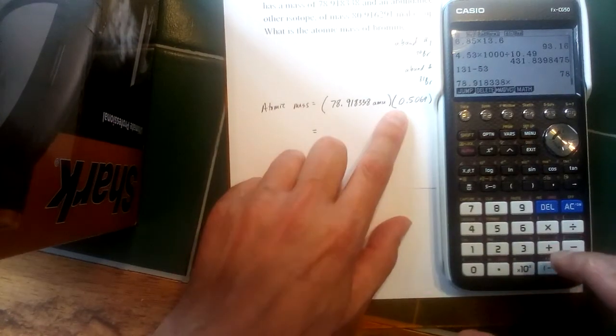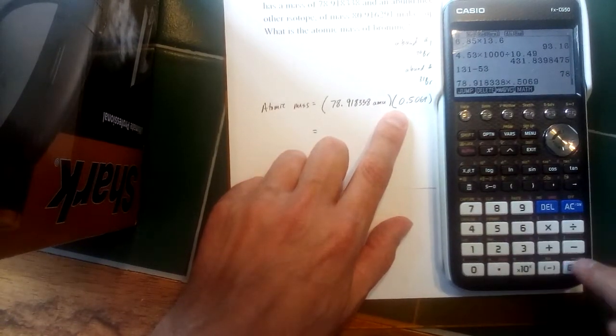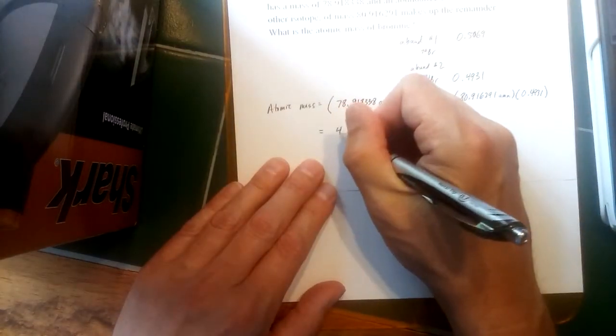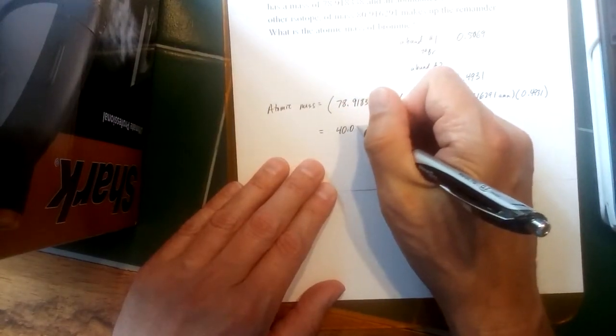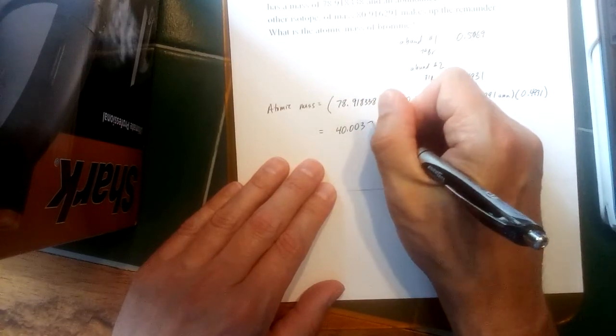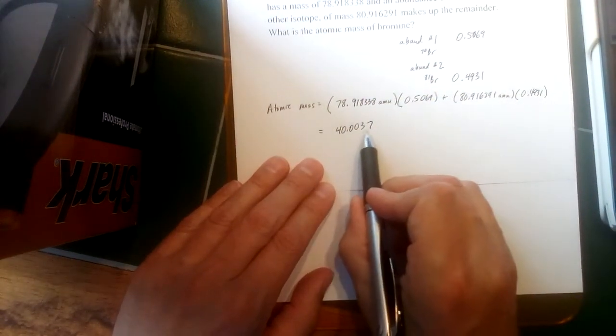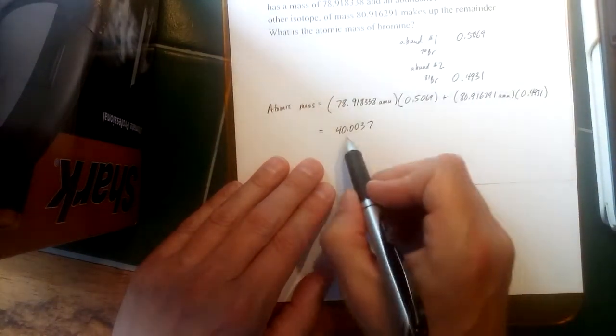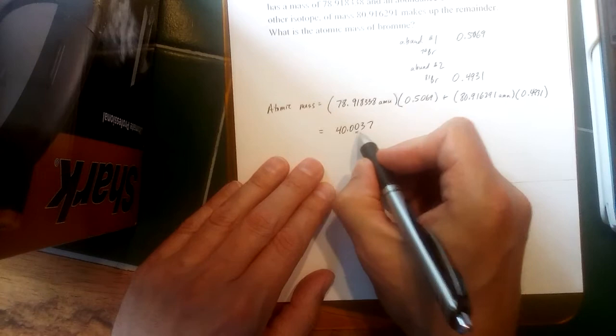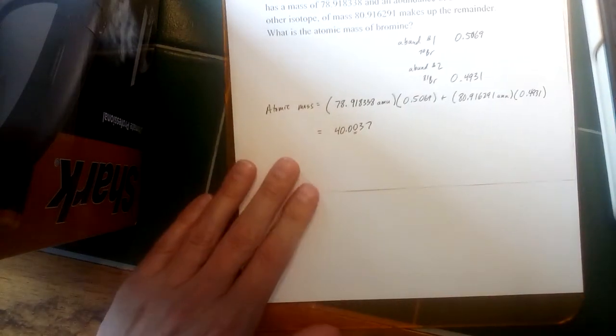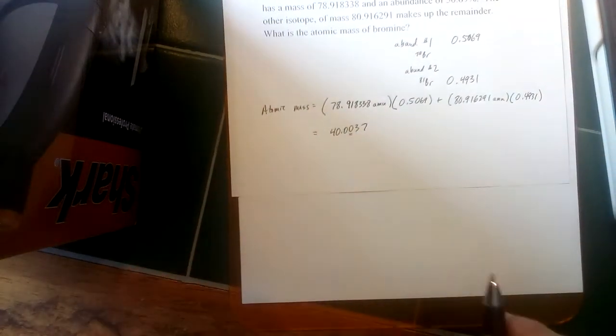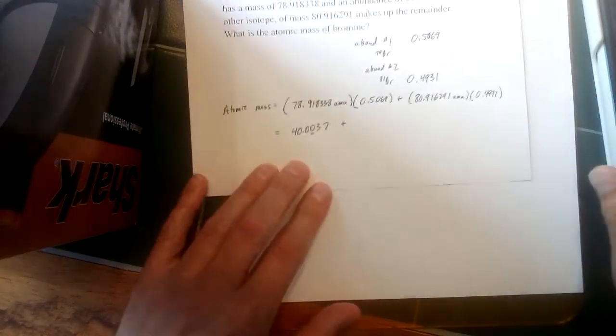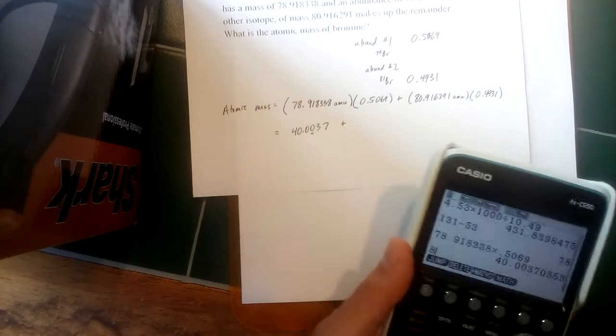So I'm going to take that mass multiply by 0.5069, and that gives me 40.0037. So I kept two extra places there to write down. Now I can keep the whole number in my calculator, but maybe just note that's the last place that really is significant is where that second zero after the decimal is.